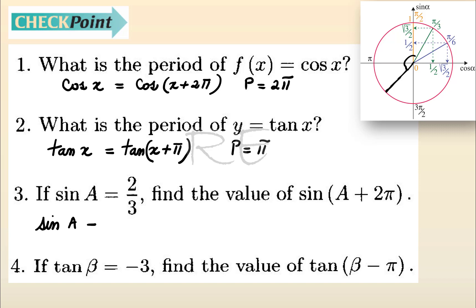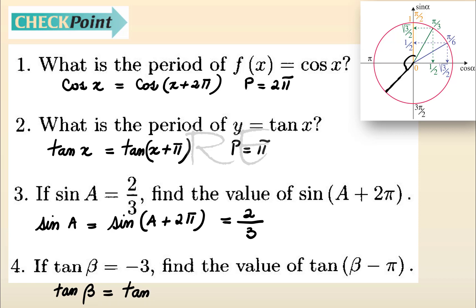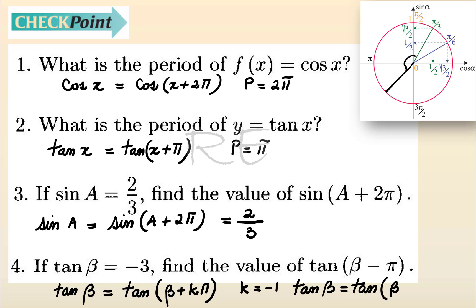If sine x is equal to 2 thirds, then we know that sine x equals sine of x plus 2 pi because the period is 2 pi. So sine of x plus 2 pi is also equal to 2 thirds. If tangent beta is equal to negative 3, we know that tangent beta equals tangent of beta plus k pi, where k is an integer. In this situation, k equals negative 1, so tangent of beta minus pi is also equal to negative 3.